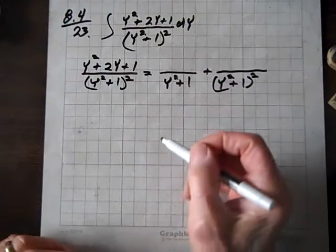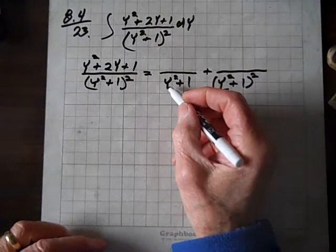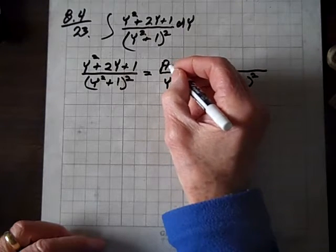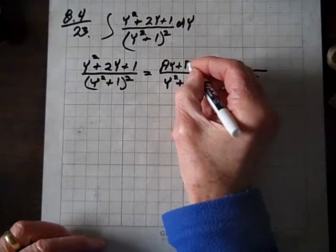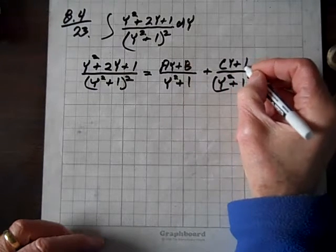What's in the parentheses does not factor, and so since this is a second degree, then our numerator has to be first degree. So we'll have ay plus b, and cy plus d.